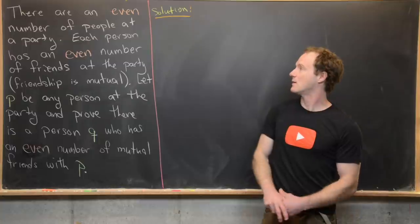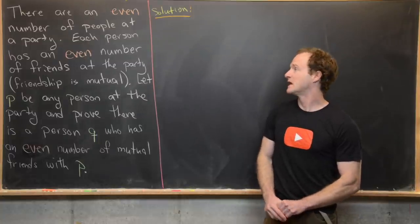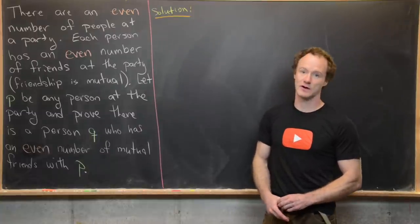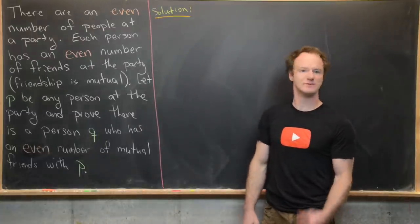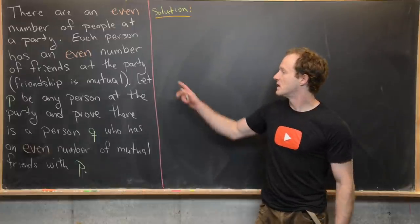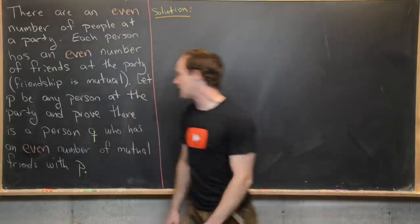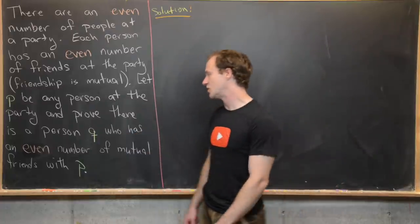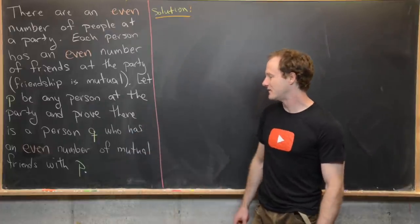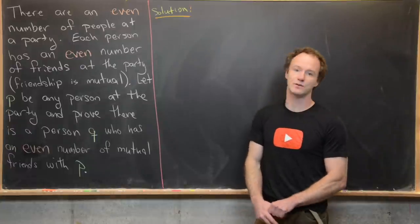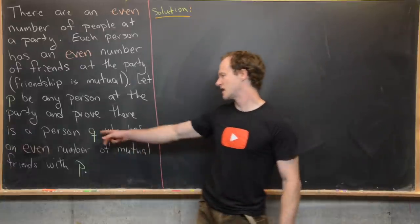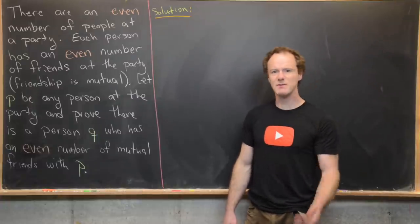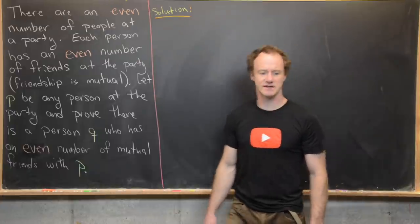There are an even number of people at a party. Each person has an even number of friends at the party, and friendship is mutual — that's going to be important. Let P be any person at the party, and prove that there is a person Q, not equal to P, who has an even number of mutual friends with P.